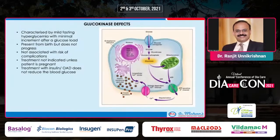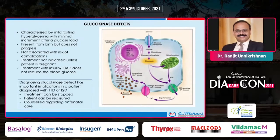Glucokinase defects cause isolated elevation of fasting glucose due to impaired glucose sensing. These patients do not need treatment and do not respond to it. HbA1c is typically in the range of 7.5 to 8, and there is no increased risk of complications. Treatment is unnecessary unless the patient is a pregnant woman. If anyone with GCK mutations is currently being treated, you can attempt to stop treatment — nothing will happen to their glycemic control.